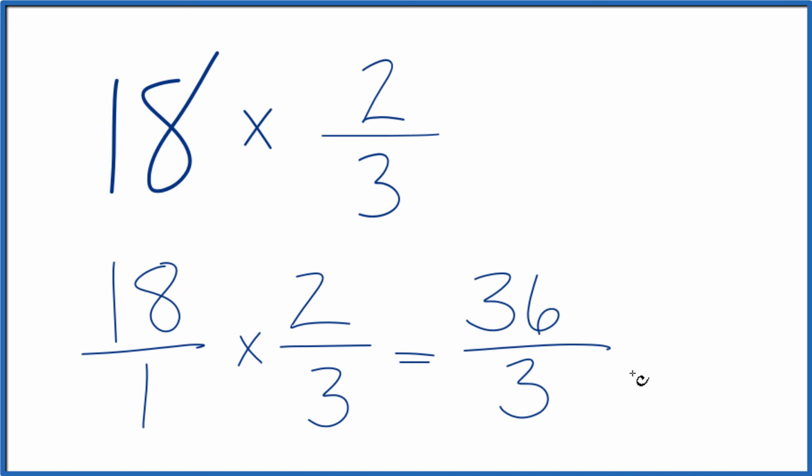36 divided by 3, 3 goes into 36 12 times. So in answer to our question, 18 times two-thirds is 12.